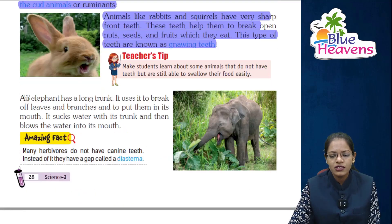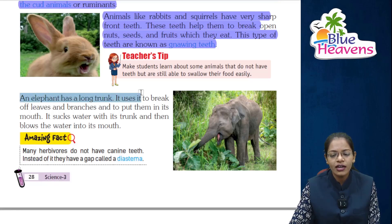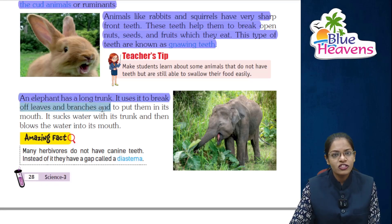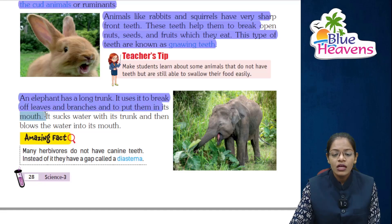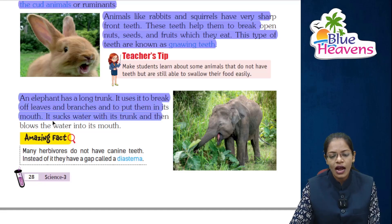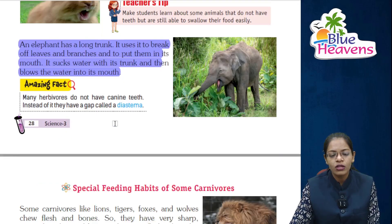An elephant has a long trunk. It uses its trunk to break off leaves and branches and put them in its mouth. It also sucks water with its trunk and blows the water into its mouth.